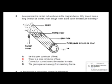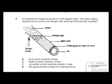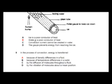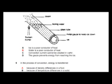The question is asking you for the reason. The options given here are: A is a poor conductor of heat, B water is a poor conductor of heat, C convection current cannot be created in water, D the gauze prevents energy from reaching the ice. Let's get the answer by elimination method first. Option D is not possible because the gauze cannot prevent energy from reaching the ice - it can reduce but it cannot prevent.